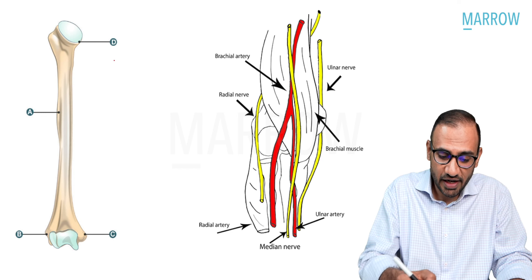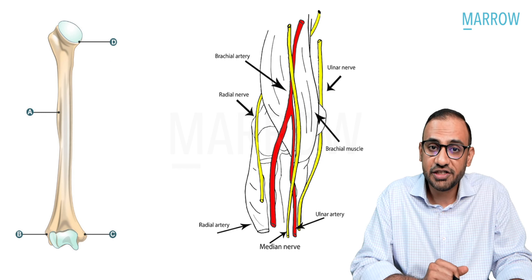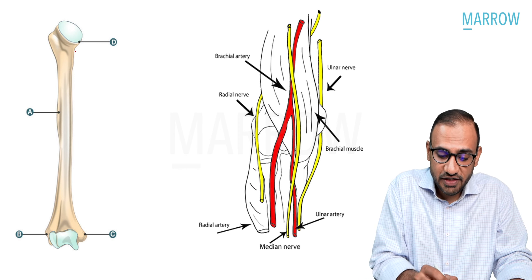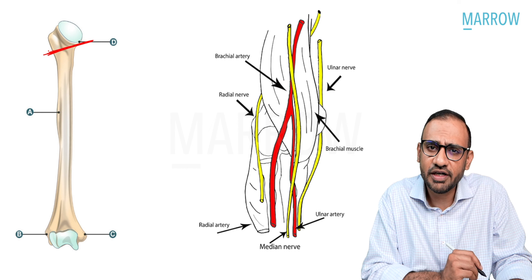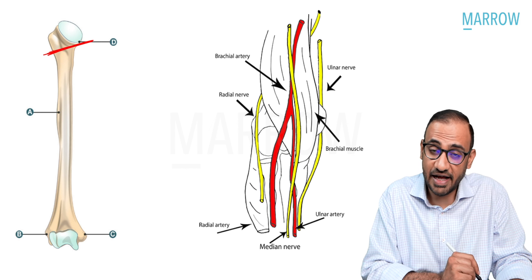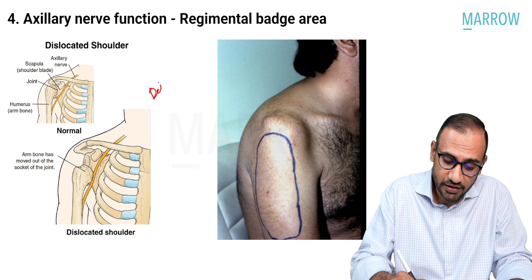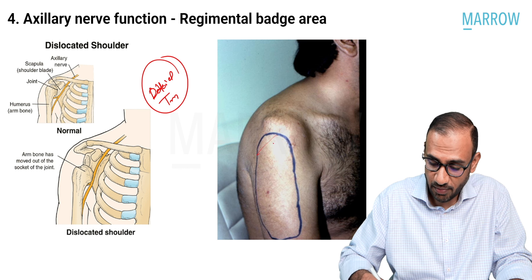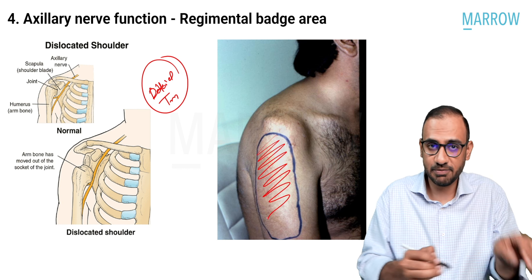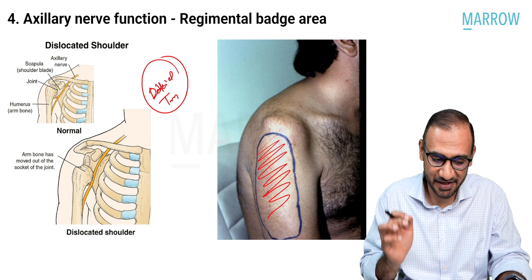Let's review the other nerves that can be injured at various parts of the humerus. Injury at the proximal humerus or surgical neck affects the axillary nerve — the patient loses deltoid and teres minor function, and has sensory loss over the upper lateral arm, the regimental badge area. Injury at the spiral groove or shaft of the humerus affects the radial nerve, which wraps around the spiral groove and perforates the lateral intermuscular septum.